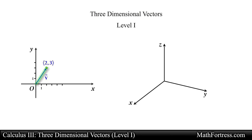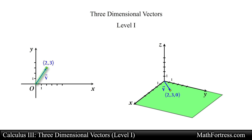Now if we wanted to represent this same vector in 3D space we will need to add an additional component — in this case the z-component. For this particular example the vector is going to be located on the xy-plane, so it will have a z-component of 0. So this vector will have an x-component of 2, a y-component of 3, and a z-component of 0.